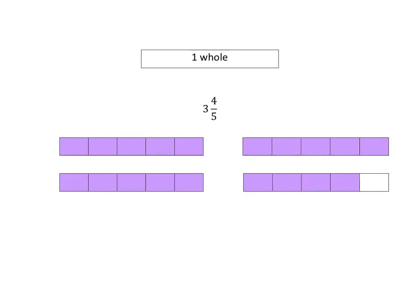We have 5, 10, 15, 16, 17, 18, 19. We've got 19 fifths. So 3 and 4/5 is the same as 19/5.